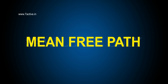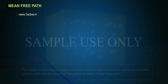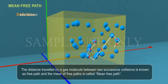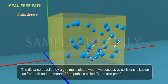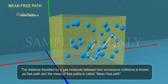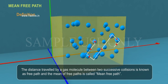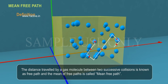Now we study about mean free path. The distance travelled by a gas molecule between two successive collisions is known as free path, and the mean of free paths is called mean free path.